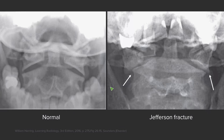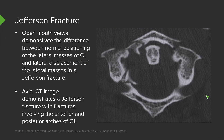Comparing with a normal film, the lateral margins of C1 and C2 are well aligned, while with the Jefferson fracture there is a step-off on both sides. On CT, you can see fractures involving both the anterior and posterior arch of C1. Because C1 is a ring, rings typically fracture in two places, so if you see one fracture you should look carefully for a subtle second fracture.